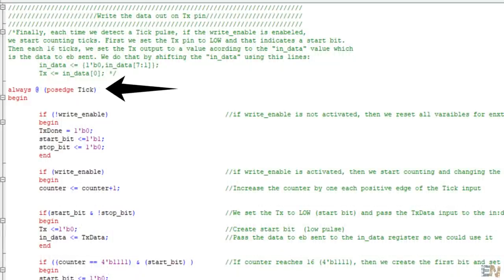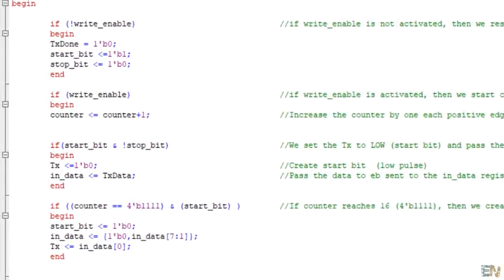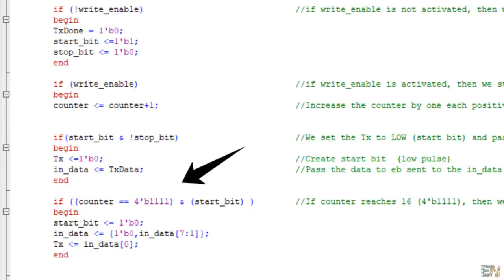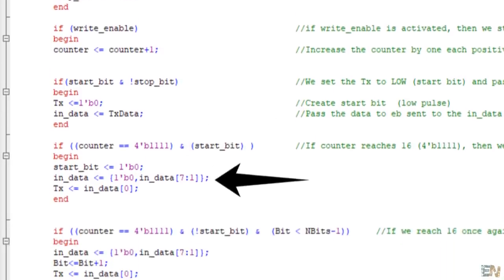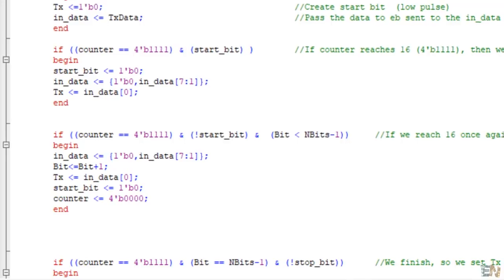But once again, at each tick pulse, we start counting. When we start, we set the TX output to low or 0 and that will create the start bit since as you remember that will be a low pulse. Now we count up to 16 and set the TX pin to the value of the first bit of the data that we want to send. We do this for 8 bits and we are done. Now we wait for the next data to be sent.